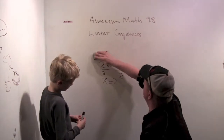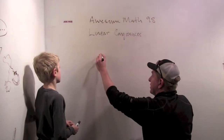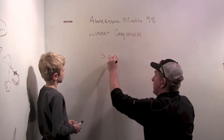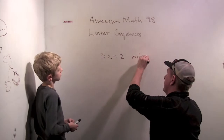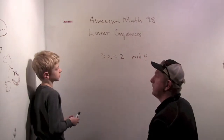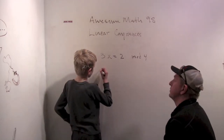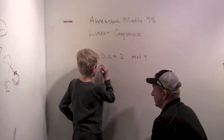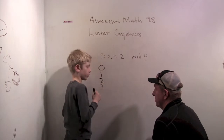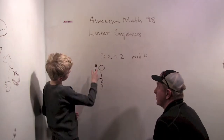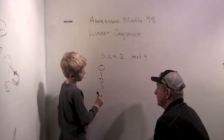So we're going to solve equations like 3x equals 2 mod 4. How would we solve an equation like this? Well, for mod 4 you only have the numbers 0, 1, 2, and 3. So you can just plug in these numbers — you can multiply these by 3 and see what you get.